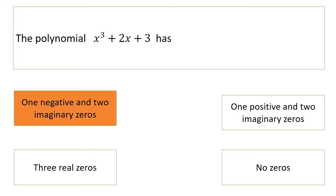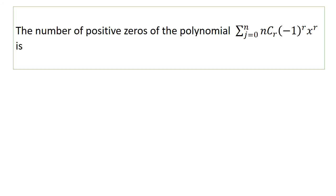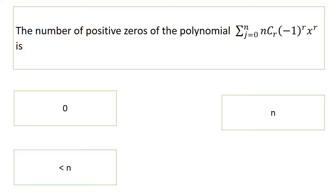The number of positive zeros of the polynomial Σ(j=0 to n) nCr(-1)^j x^r is: zero, n, less than n, or r. The answer is n.